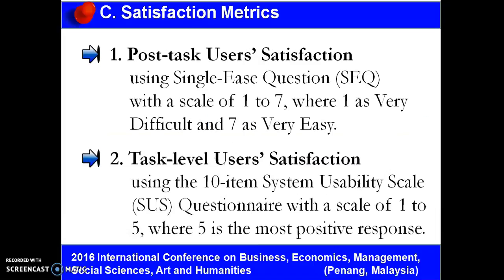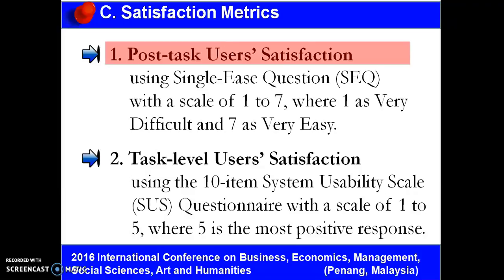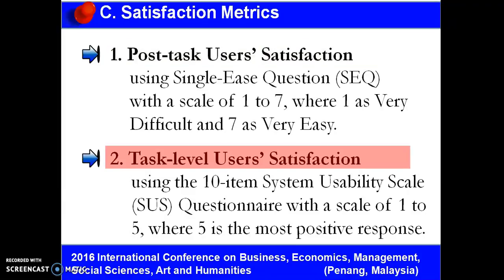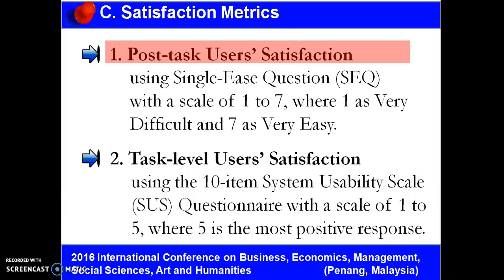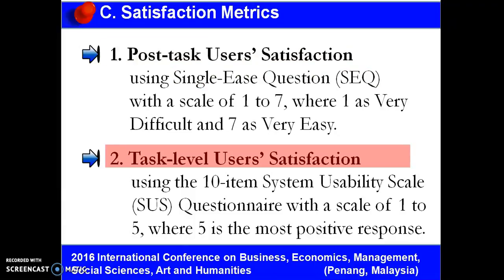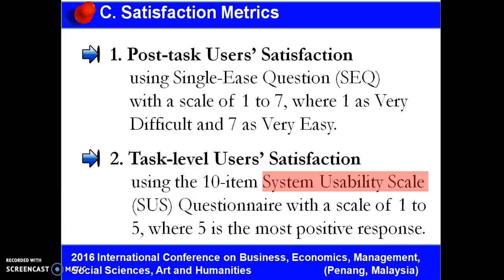Referring to satisfaction metrics, using standardized satisfaction questionnaires, the main values of the user's post-task satisfaction and task-level satisfaction are derived. For post-task user satisfaction, we use the Single Ease Question with a scale of 1 to 7, where 1 is considered very difficult and 7 is very easy. For task-level user satisfaction, we use the System Usability Scale with a scale of 1 to 5, where 5 is the most positive response.